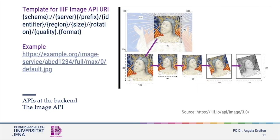Here we are looking at a sample for an example of this URI and its parts. There are fixed parts in this URI that refer to the angle of inclination, or define if your image is in color or in black and white.